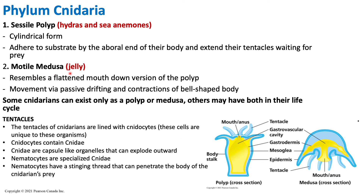The motile medusa resembles a sessile polyp in physical structure, but it is able to move around either by passive drifting or by contracting its bell-shaped body. Looking at the medusa, it resembles a bell and is able to move by contracting motion. The polyp and medusa look very similar — the medusa is like the upside-down, flatter version of the polyp. Some cnidarians can have both a polyp and a medusa life stage, while others may be restricted to only one type of life cycle.